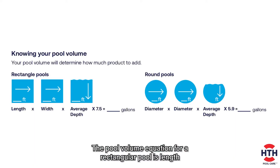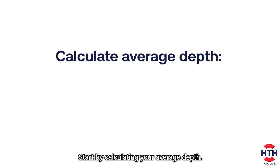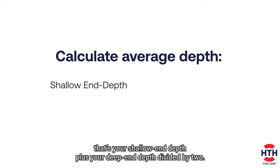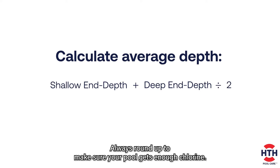The pool volume equation for a rectangular pool is length times width times average depth times 7.5. Start by calculating your average depth — that's your shallow end depth plus your deep end depth divided by two. Then you can calculate the rest. Always round up to make sure your pool gets enough chlorine.